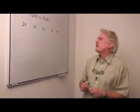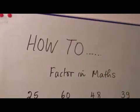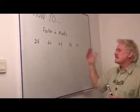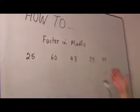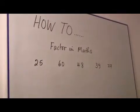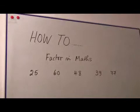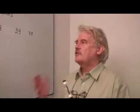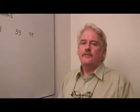Hi, I'm Steve Jones, and I'm going to talk about how to factor in maths. Now, these numbers 25, 60, 48, 39, 77, these don't look like anything special, and they're not. They're just ordinary numbers. But there is something special about all of them. They are not prime numbers. That is, they are special in that they have things called factors.